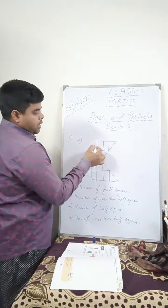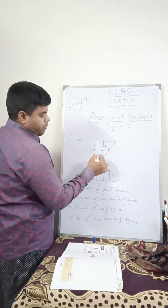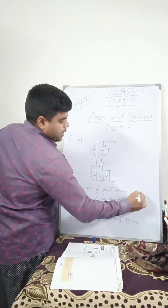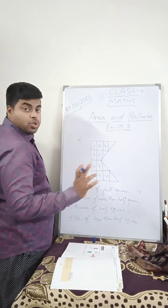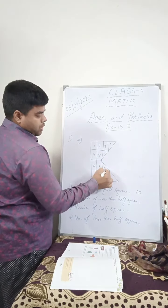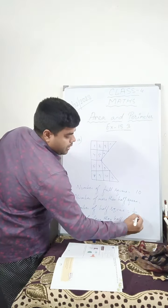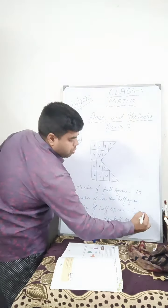Now see, full square is how much? 1, 2, 3, 4, 5, 6, 7, 8, 9, 10. So 10 full squares. And half square is how much? 1, 2, 3, 4. So half square, you'll write half into how much it is there? 4. So you'll write 4.